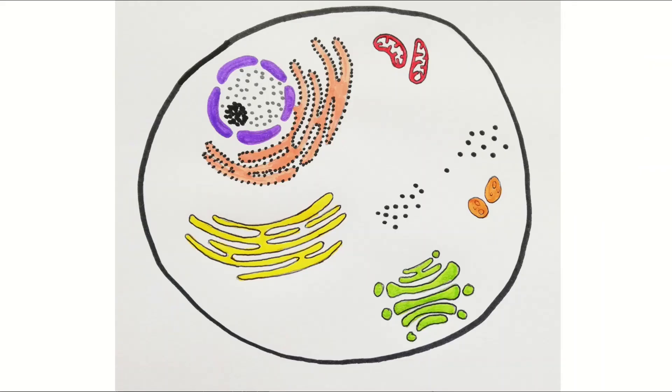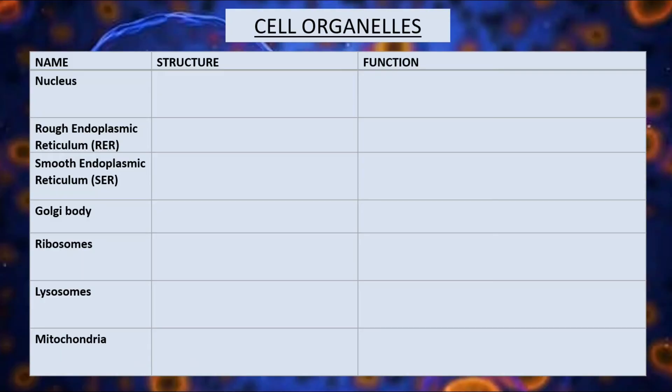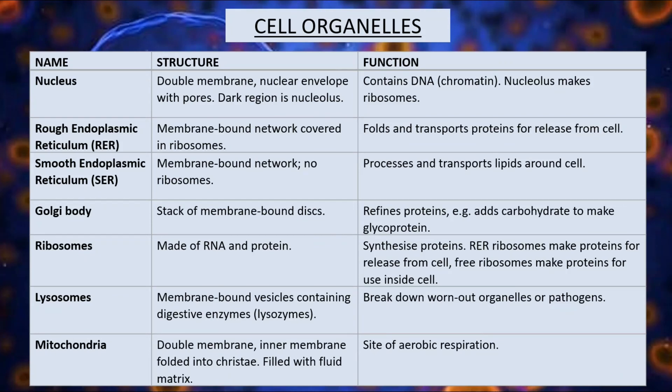So that's it — a tour around a typical animal cell. If you can fill in this table from memory, then you know that you're confident with this topic. There is a lot of detail and lots of new words to learn, so do stick with it. I've put a link to a printable version of this table and some other resources in the description below, so do take a look and I'll see you in another video.